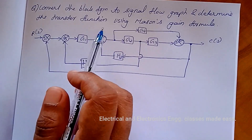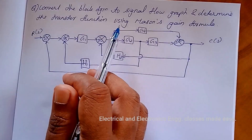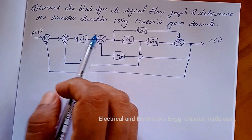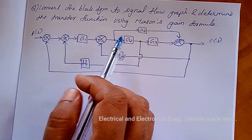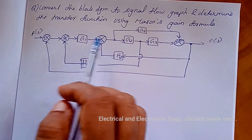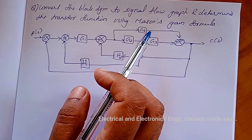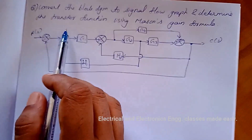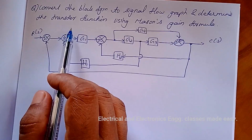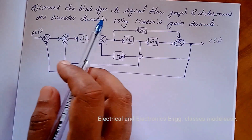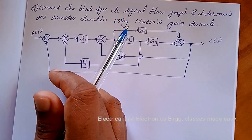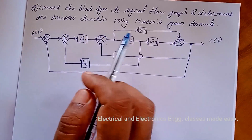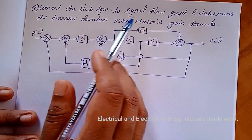Hello everyone, welcome to the new class. Today's class is a continuation of signal flow graph problems. I am discussing the conversion of block diagram to signal flow graph and then determining the transfer function using Mason's gain formula. I have taken classes on basic electrical engineering, digital electronics, and now control systems and basic mechanical engineering. Please watch the playlist.